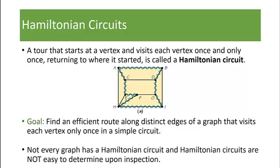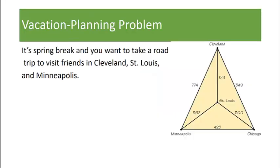We saw in our previous video that not every graph has a Hamiltonian circuit, and Hamiltonian circuits are not easy to determine upon inspection. Our focus of this video is the vacation planning problem or the traveling salesman problem.